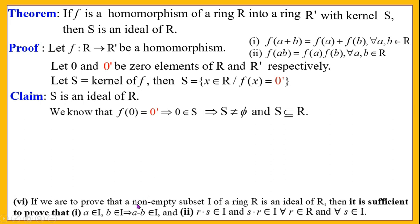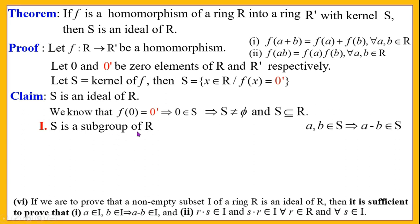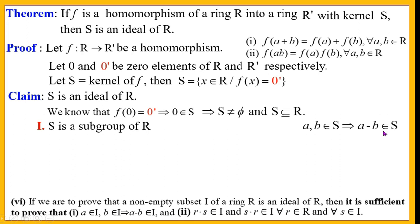To prove that a non-empty subset S of a ring R is an ideal of R, it is sufficient to prove: first, a, b in S implies a − b in S (the subgroup condition); and second, r · s and s · r belong to S for all r in R and s in S (the ideal condition). Therefore, we first have to show that S is a subgroup of R, which we do by showing a, b in S implies a − b in S.